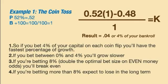If you bet between 0% and 4%, or between 4% and 8%, you'll still grow, but more slowly. If you're betting 8% — double the optimal bet size on even money odds — you'll break even. And if you're betting more than 8%, expect to lose in the long term.